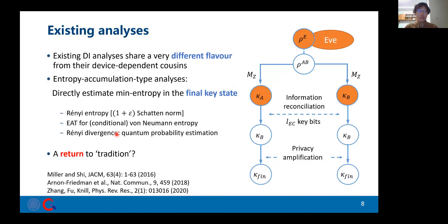This complementarity approach inherently adapts to the non-IID cases. On the other hand, the existing analysis for DI tasks share a very different flavor from this common practice. In summary, these results directly examine the final state, which is a classical quantum state, and estimate its amount of min entropy. These works apply various entropy accumulation results, and some of them have a rather asymptotically tight key rate, like the EAT work. Yet we want to see, is there a possibility to return to the tradition?